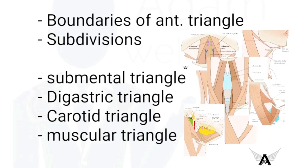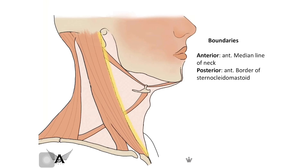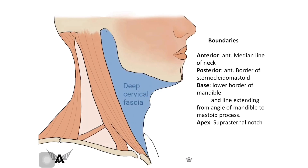Starting off with the boundaries, the anterior triangle is anteriorly bounded by the anterior median line of the neck, posteriorly bounded by the anterior border of sternocleidomastoid. The base is formed by the lower border of mandible and the line joining the angle of mandible to the mastoid process. The apex is formed by the suprasternal notch and the roof is formed by the deep cervical fascia. Remember, all the subdivisions of the anterior and posterior triangle have only the deep cervical fascia as their roof.